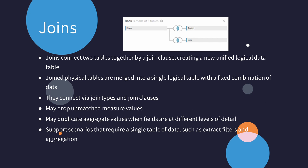Let's go over what we've learned about joins. Joins connect multiple physical tables together using a join clause to create a logical table with a fixed combination of data. We've been over the various join types indicated by the Venn diagrams. We've seen how some joins can lead to duplication of data. Joins may also cause unmatched measures to be dropped. They also support scenarios that require a single logical table of data, such as for extract filters and aggregation. Let's jump into Tableau and take a look at these different operations in action.